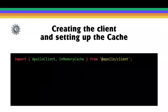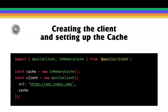First we import the cache and client, then we create the cache, and then we create the client — telling it where to find our GraphQL API and giving it an instance of the cache. With this basic setup we can pull in remote state using queries and make changes using mutations.